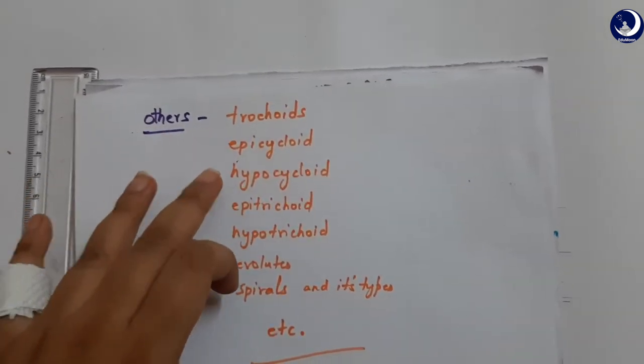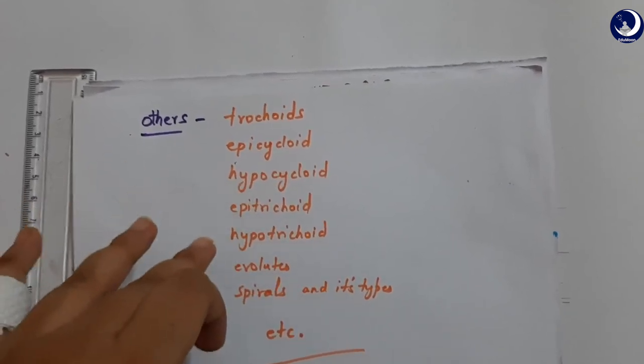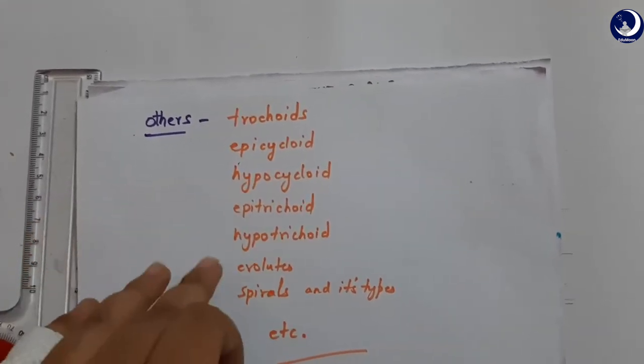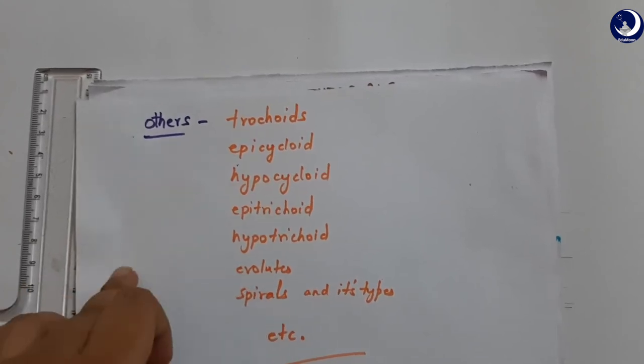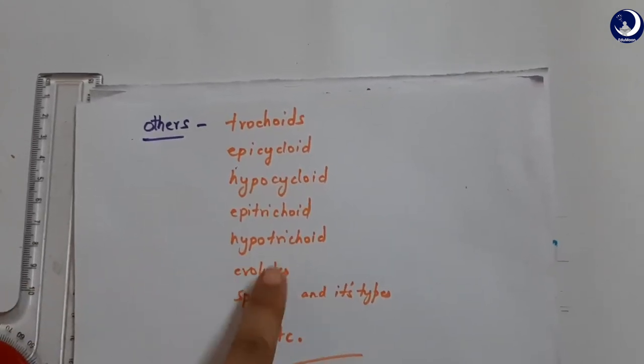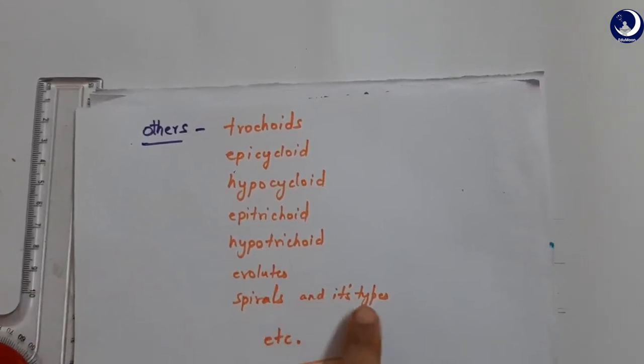But some other curves are trochoids, epicycloids, hypocycloids, epitrochoid, hypotrochoid, evolutes, like how we discussed involutes, similarly, spirals and its types, etc.